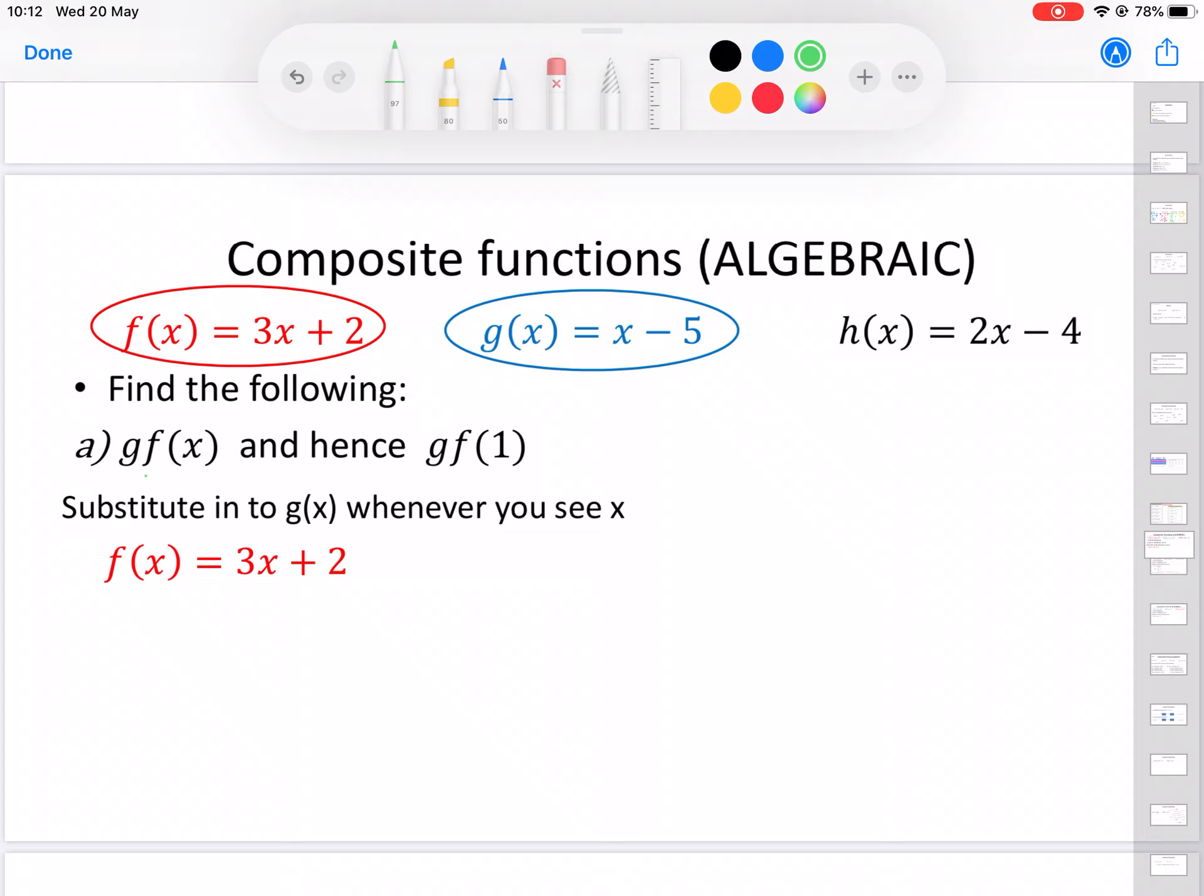Then we need to move on to the fact that g(x) = x - 5. Now the weird part here is this whole f(x) part, that whole part there is actually now our value for x. So we're going to move that into our g function where x is.